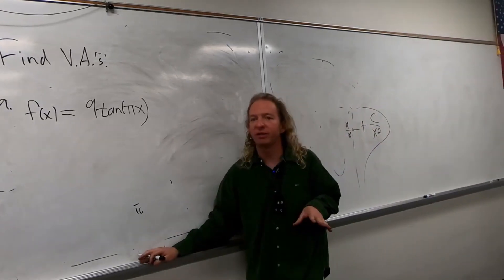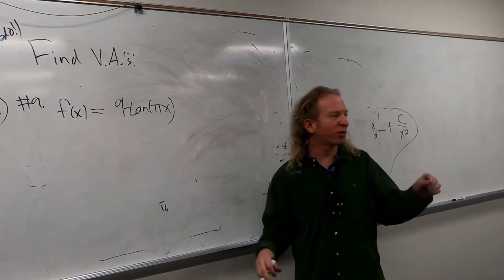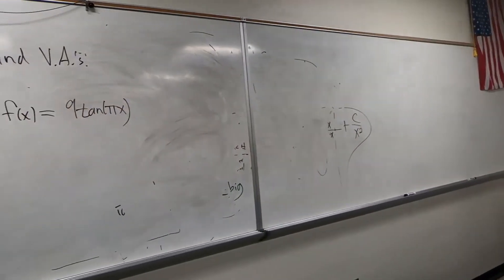Alright, so when you're looking for VAs, just think about whenever it's a trig function, think about what's on the bottom. You don't have to write it down, but you can.